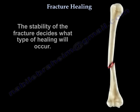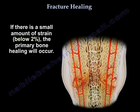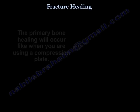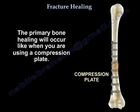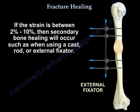Fracture healing: the stability of the fracture decides what type of healing will occur. If there is a small amount of strain, like below 2%, primary bone healing will occur, as is the case when you use a compression plate. If the strain is between 2% to 10%, then secondary bone healing will occur, such as when using a cast, a rod, or external fixture.